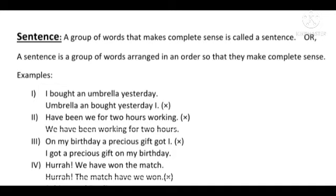Consider: 'I bought an umbrella yesterday' versus 'Umbrella and bought yesterday I.' Which collection can be called a sentence? Of course, the first one — 'I bought an umbrella yesterday.' In the second pair: 'have been we for two hours working' is incorrect, whereas 'We have been working for two hours' is correct.